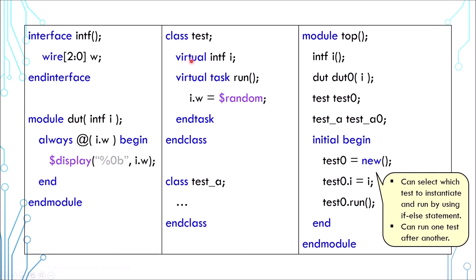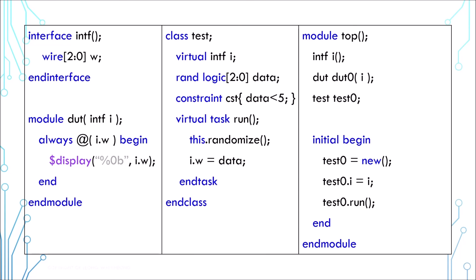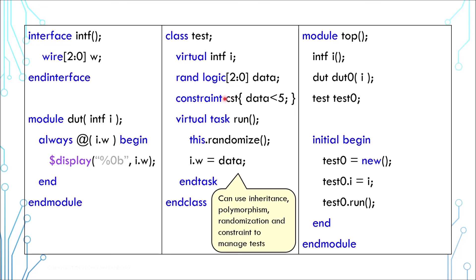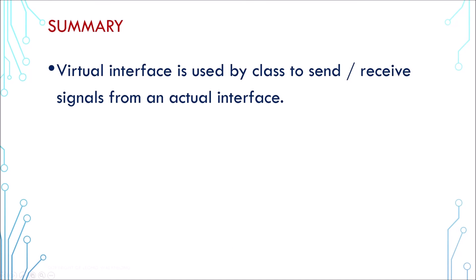You may say that a module can be written in the same manner by using a task instead of an initial block — why bother using a class? Well, this example is too simple. Imagine a more complicated design with more parts and more protocols. We can use random variables, constraints, inheritance, and polymorphism to manage different variants of tests. A module cannot achieve that.